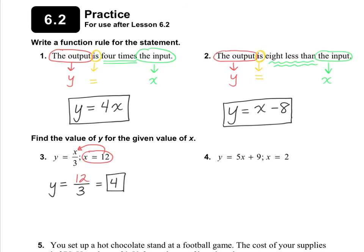We're going to do the same thing for number 4. We're going to take what x is — they want x to be 2. We're going to substitute it in for the x in the equation. So I'm going to rewrite the equation, but instead of x I'm going to put parentheses and substitute what x is — they want x to be 2. I would like for you to simplify this and see if you can find the answer. I got that y equals 19. If you did not get y equals 19, see if you can find your mistake.